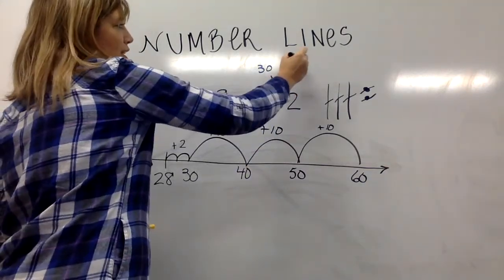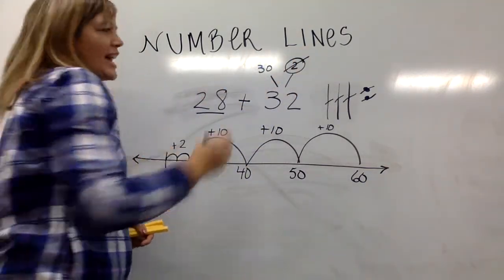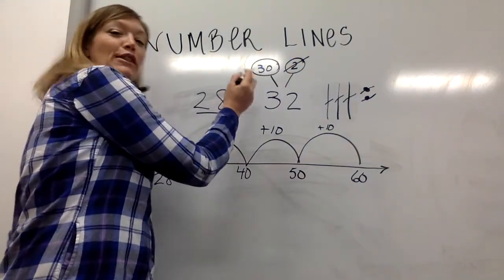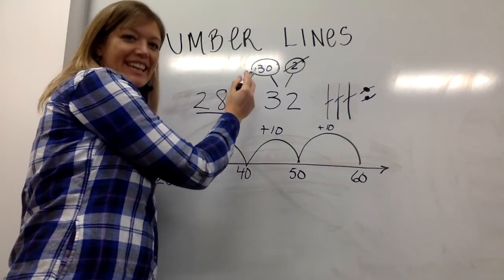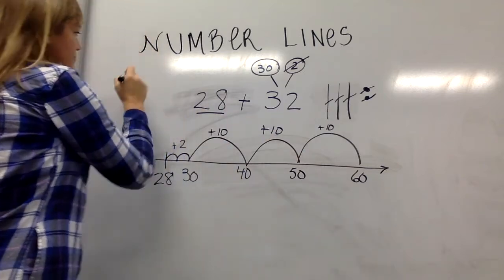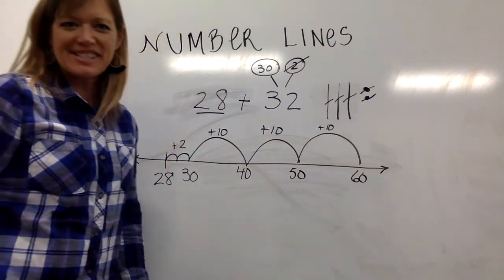I added my two jumps to get a friendly number of 30. I take my 30 jumps to get to 60. So 28 plus 32 is 60.